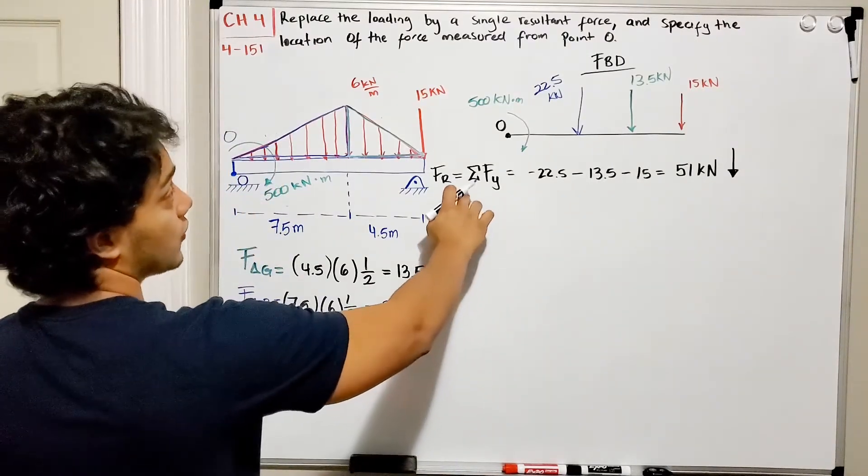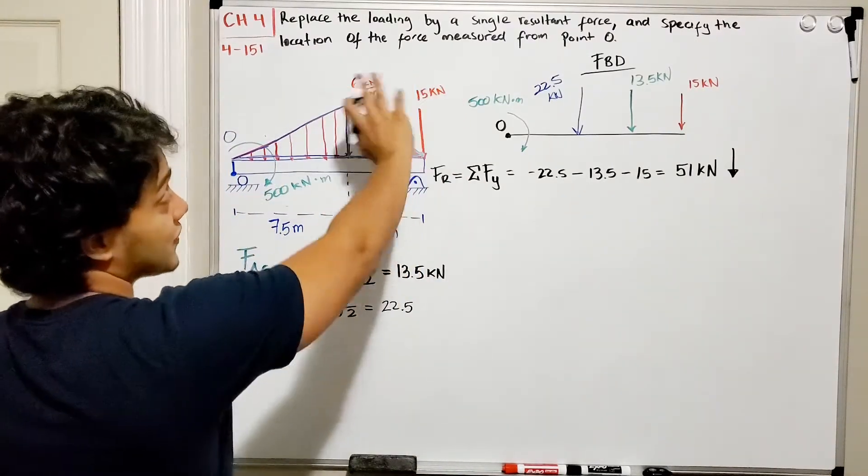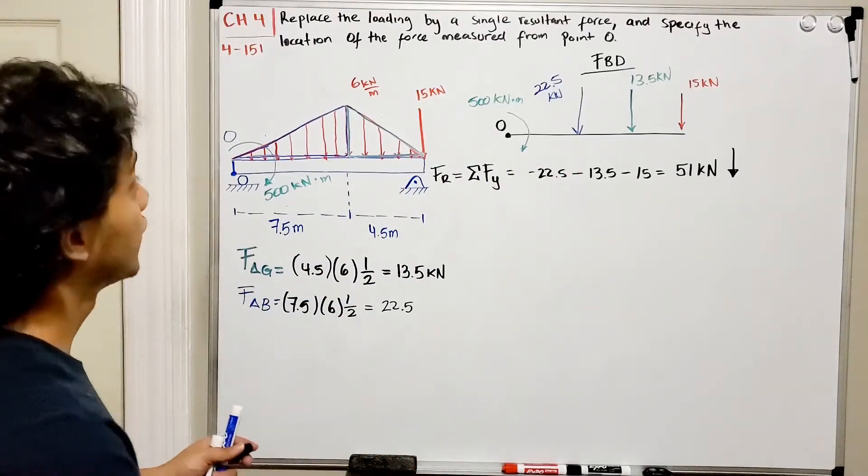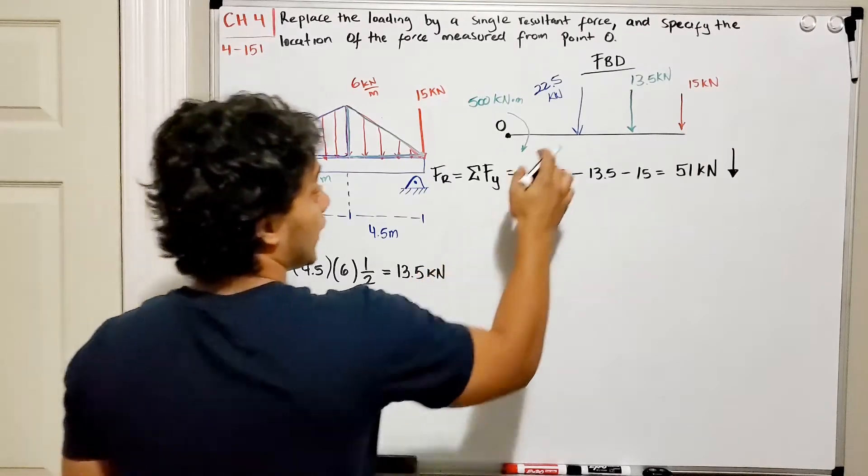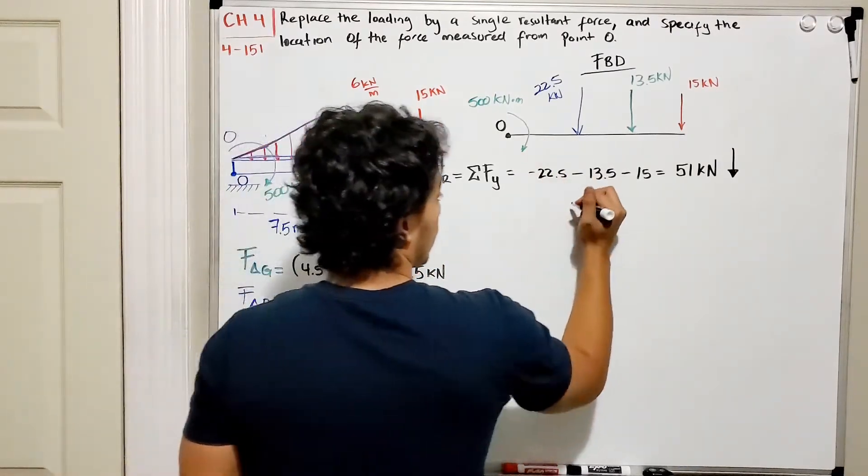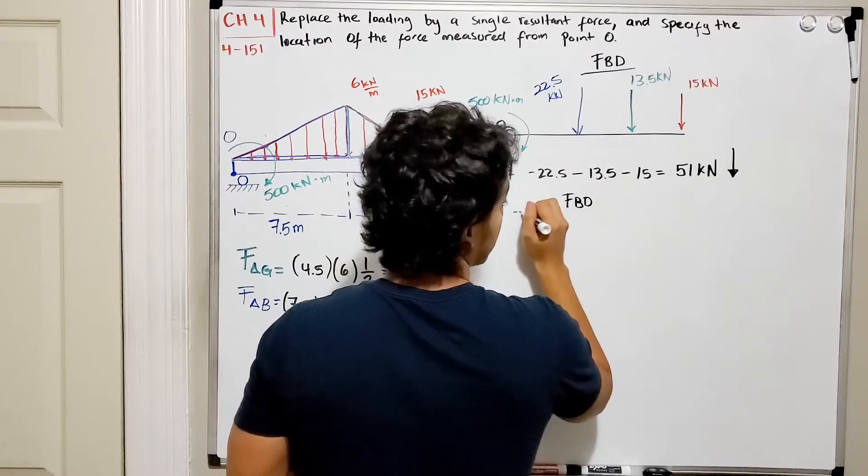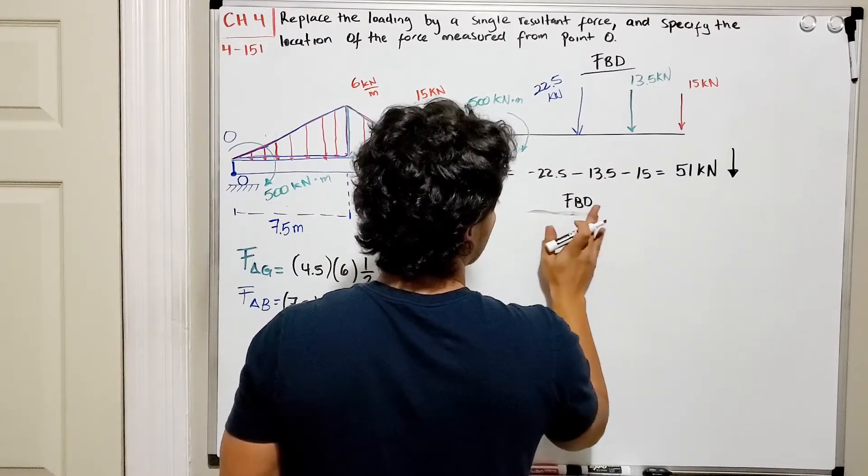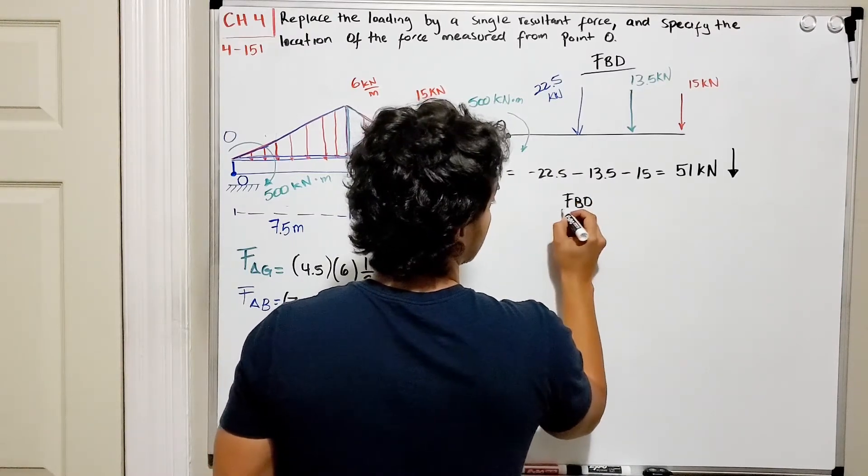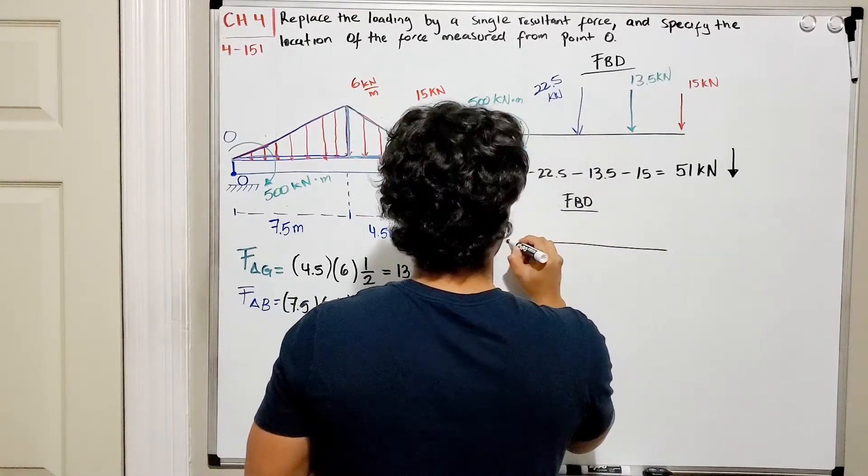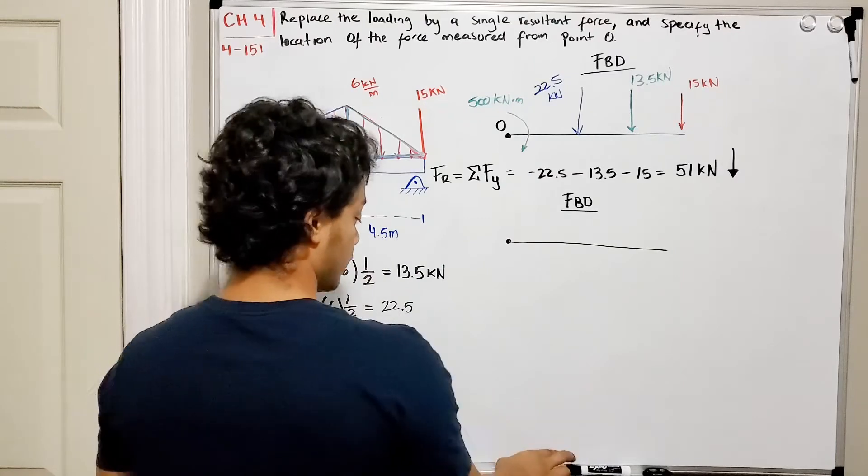Now knowing this, and they want us to replace the loading by a single resultant force so it doesn't have an extra moment, we need to find where if we were to redraw this system like this.